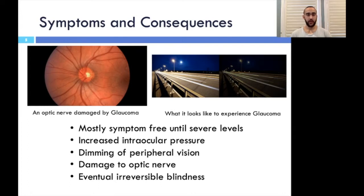People who experience glaucoma are generally symptom-free until they reach more severe levels. As the pressure increases, those affected will begin to notice their visual field deteriorating with progressive dimming around the edge of their vision. This is a result of increased pressure on the optic nerve, which disrupts the tissue's ability to accurately conduct electrical signals to the brain. If pressure continues to increase, the optic nerve will eventually begin to experience damage, which can result in the permanent loss of vision.